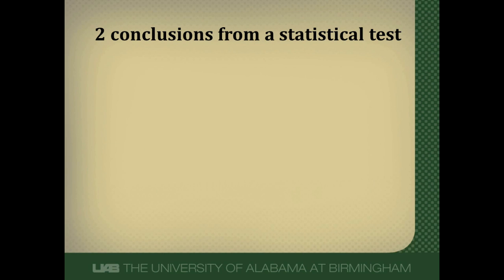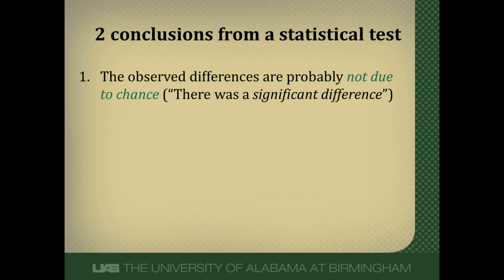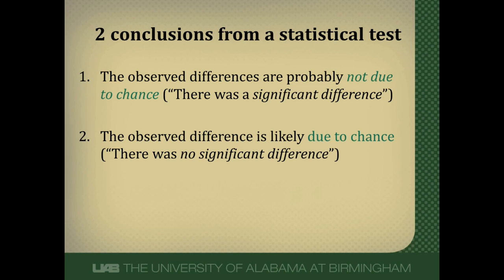There are two conclusions that we can draw from a statistical test. One is that the observed differences between the two arms of the study are probably not due to chance — that the finding was statistically significant. We also could conclude that the observed differences are likely due to chance — that there was no significant difference, that it wasn't statistically significant.